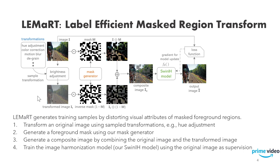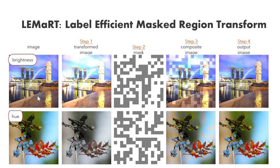Our image harmonization model is called SWING IH and is designed based on the SWING transformer. In this slide, we show the output of each step visually. In column 2, we see that Step 1 produces a transformed image. In column 3, Step 2 produces a mask. In column 4, Step 3 produces a composite image. In column 5, the output of Step 4 is a harmonized image.